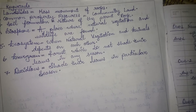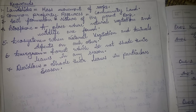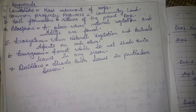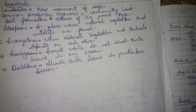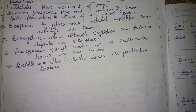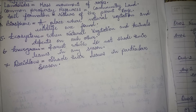First keyword: landslides — mass movement of rocks. Second keyword: common property resources — community land.